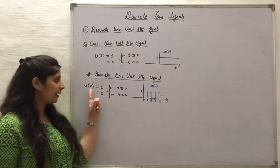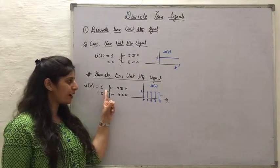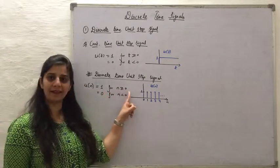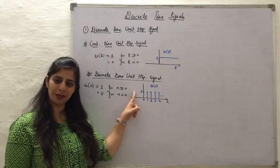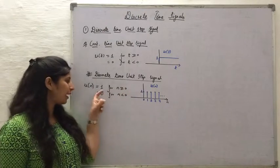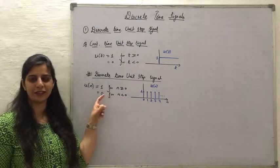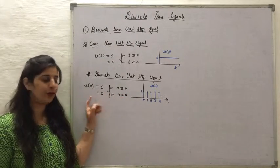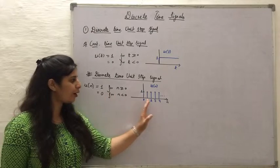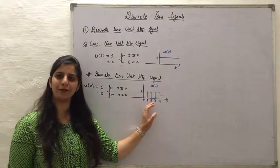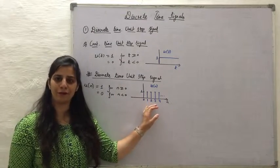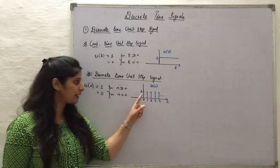The discrete time unit step signal is denoted u(n), where n can only take integer values. It has a value of 1 for n greater than or equal to 0, and a value of 0 for n less than 0.